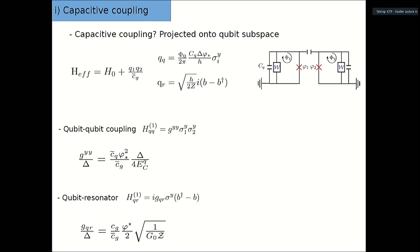Now, for capacitive coupling: we join two qubits with a capacitor and get a charge-charge interaction. We do the same trick — project the charge onto the qubit basis — and we get a sigma y operator. If we add a resonator, we get the standard form with the impedance. The coupling is in the y-y direction, and if you have two similar qubits, you get two gaps. The coupling divided by the gap depends on the gap.